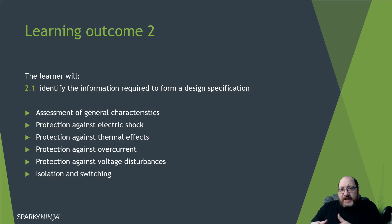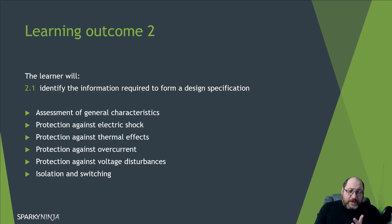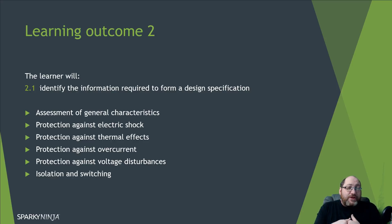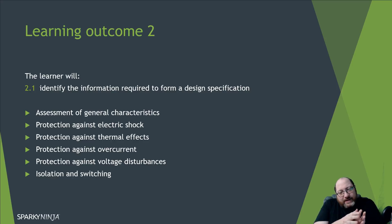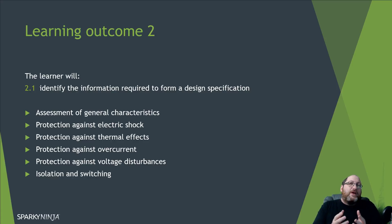Part four covers protection for safety — electric shock, thermal effects, overcurrent, and voltage disturbance. Part five covers selection of equipment, isolation and switching. So if you've studied the wiring regulations and you've got that on board, this isn't really anything new, but we need to go back and think about it more.